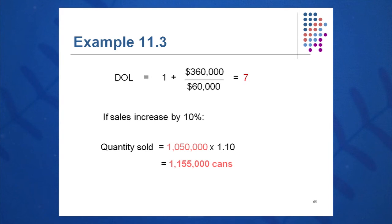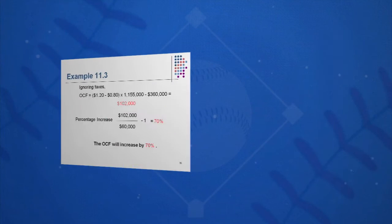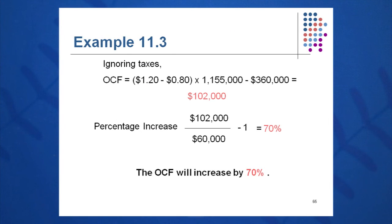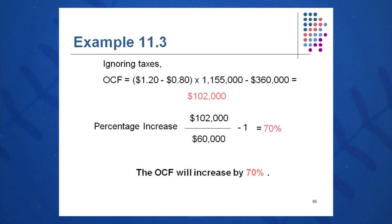The degree of operating leverage is one plus fixed cost over OCF: one plus $360,000 over $60,000, which comes out to a DOL of seven. What does that mean? This heavily capital-intensive company, if sales go up 10%, we are levered up by our high fixed cost by a factor of seven. So our degree of operating leverage will leverage that small increase in sales to a large increase in OCF of 70% — a 10% increase in sales becomes a positive 70% change in OCF.